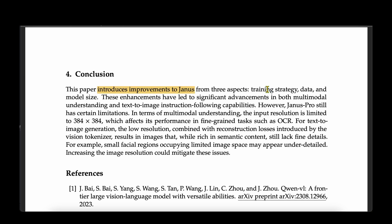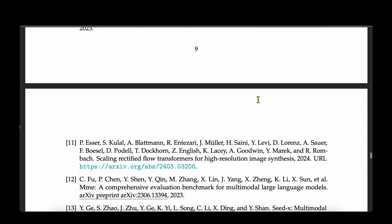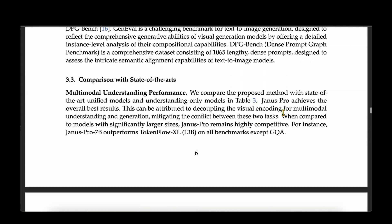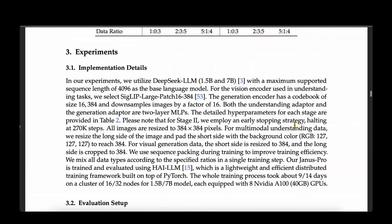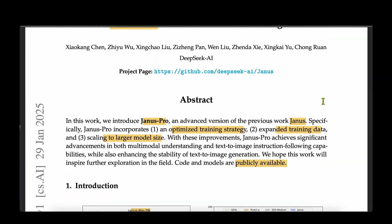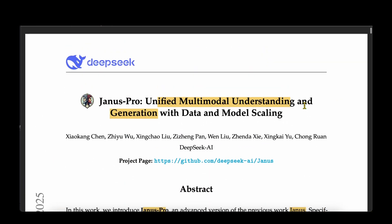In conclusion, they have introduced improvements to Janus across three aspects: training strategy, data, and model size. One limitation noted is that for multimodal understanding, the input resolution is limited to 384×384. Overall, it's a fairly simple paper with minor improvements to Janus, but it has led to a state-of-the-art unified multimodal model that outperforms existing unified models.